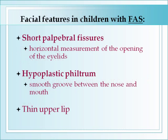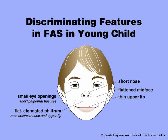Regarding facial features, the typical and nearly consistent features in children with fetal alcohol syndrome include short palpebral fissures — the horizontal measurement of the eyelid opening — a hypoplastic philtrum, which is the groove between the nose and mouth that is smoothed out, and a thin upper lip. A diagram depicts these facial characteristics, showing a cranium that is small relative to the face, a smooth elongated philtrum, small eye openings, and a thin upper lip.